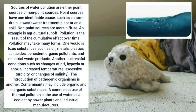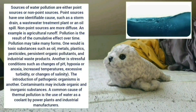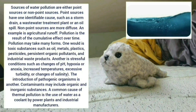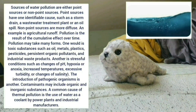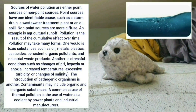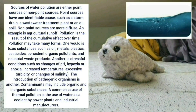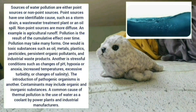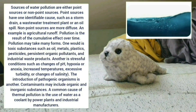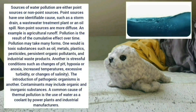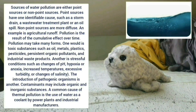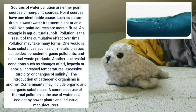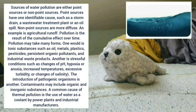Sources of water pollution are either point sources or non-point sources. Point sources have one identifiable cause, such as a storm drain, a wastewater treatment plant, or an oil spill. Non-point sources are more diffuse; an example is agricultural runoff. Pollution is the result of the cumulative effect over time and may take many forms.